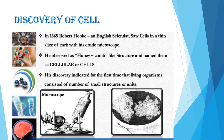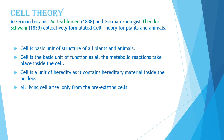Later, in 1831, Robert Brown described the nucleus in the cell of orchid roots. Then J.E. Purkinje and Von Mohl named the living substance of the cell as protoplasm. Regarding cell theory: German botanist M.J. Schleiden and German zoologist Theodor Schwann collectively formulated cell theory for plants and animals. In 1885, German physiologist Rudolf Virchow gave the phrase 'omnis cellula e cellula,' meaning all cells arise from pre-existing cells, and this principle was also added to cell theory.